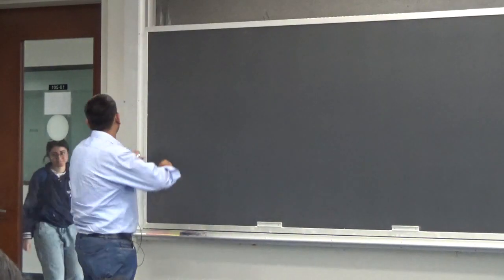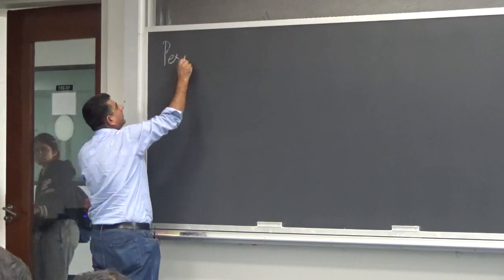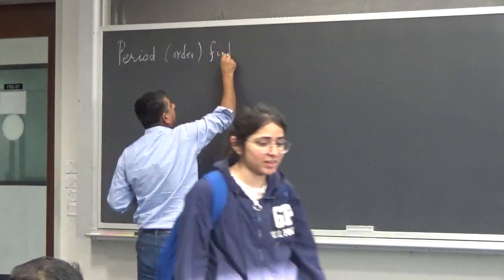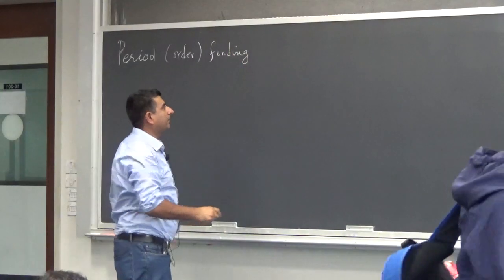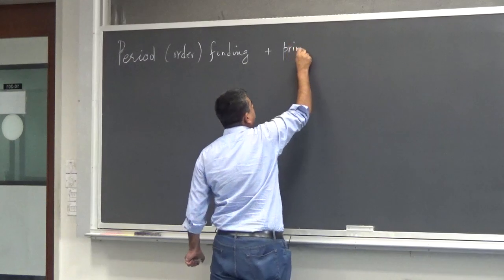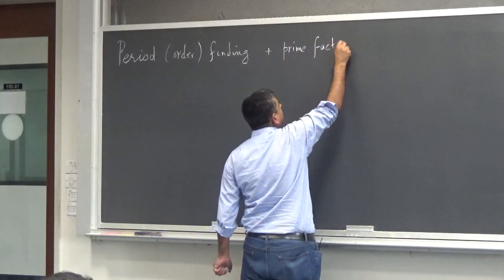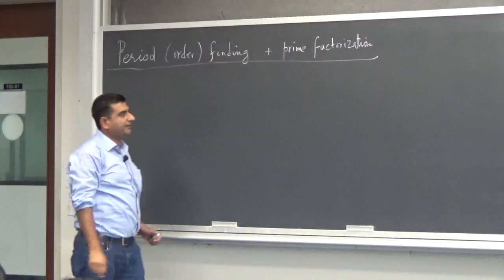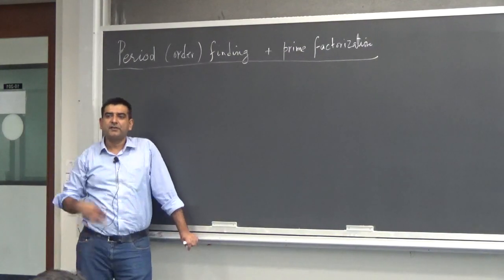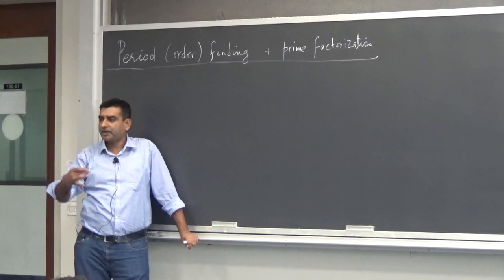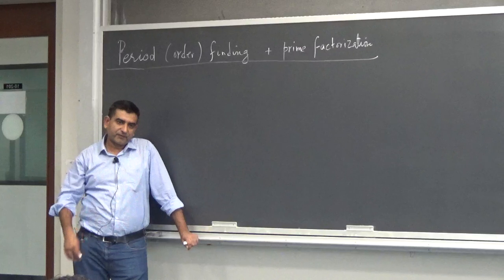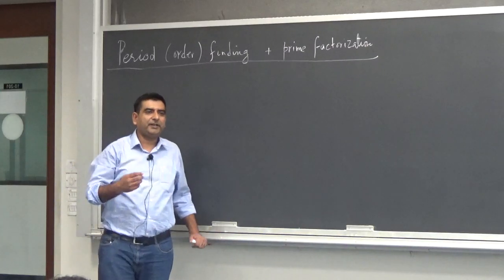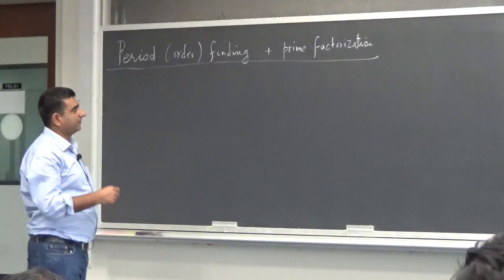We are going to discuss period or order finding and the related problem of prime factorization. One of the hallmarks of quantum algorithms is this particular algorithm which helps us find the prime factors of a composite number. It was first proposed in 1994 by Peter Shor, and as mentioned several times earlier, this was the algorithm that really sparked interest in quantum computing and quantum information processing.